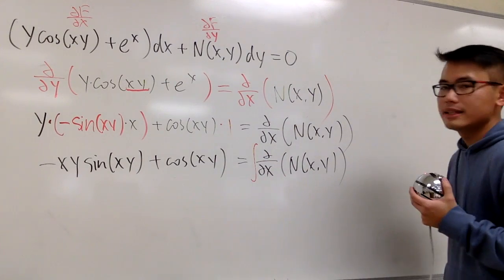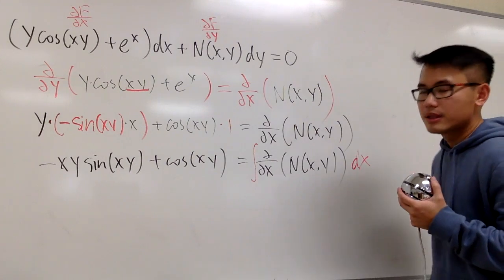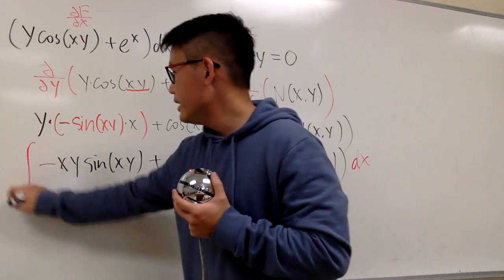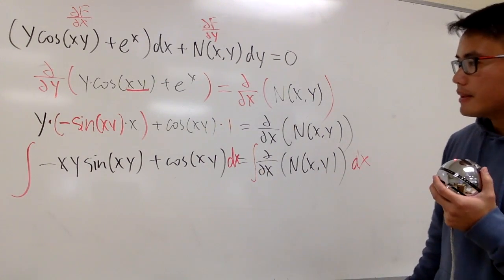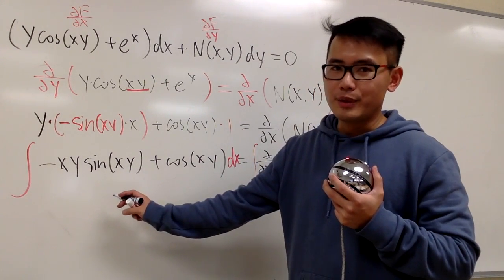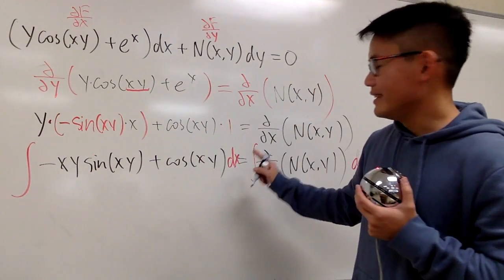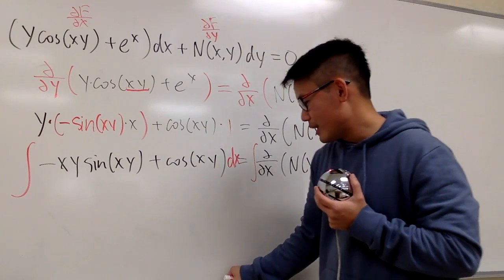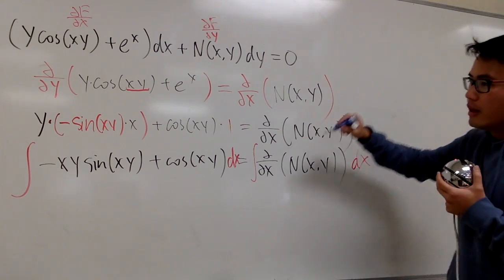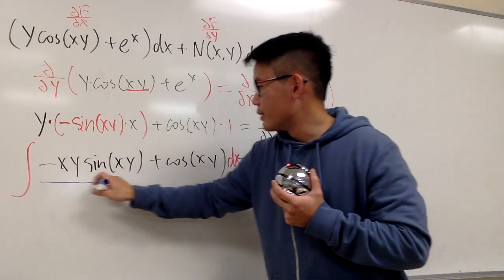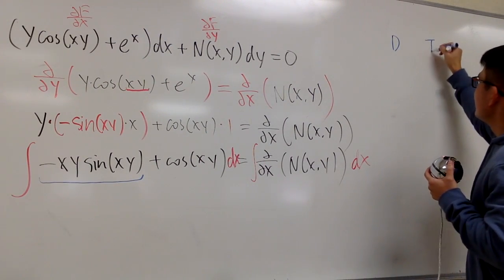To figure out N(x, y), we just have to integrate both sides with respect to x so that we can cancel things out. Let's go ahead and do that — integrate this with respect to x. We have negative xy times sine of xy, and we have to integrate that in the x world. We have to use integration by parts, specifically the DI method.